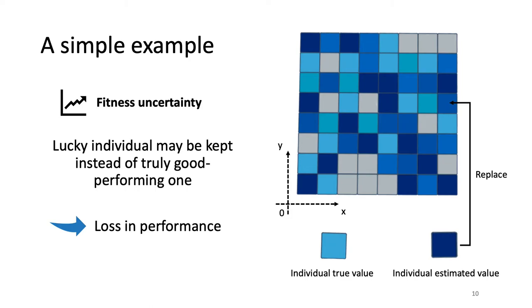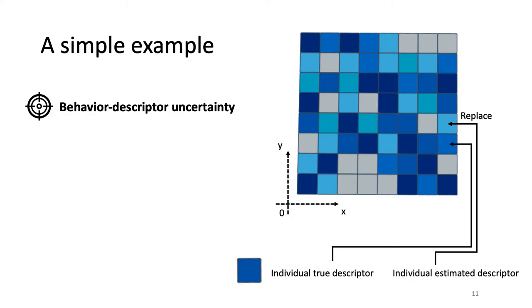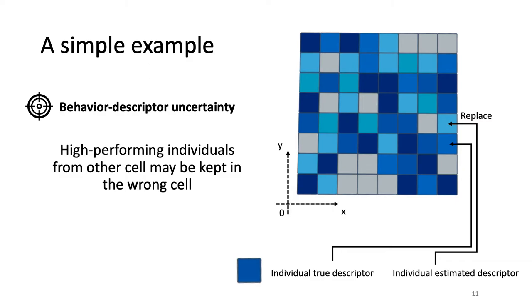Similarly, if you have uncertainty on the behavior descriptor — meaning you are not absolutely sure of the final position of your robot — you could get an individual with an estimated descriptor in a neighboring cell in which the highest fitness achievable is not as high as that of this individual. This individual will block the cell by preventing a truly good-performing and diverse individual from filling it, resulting in a loss in diversity.